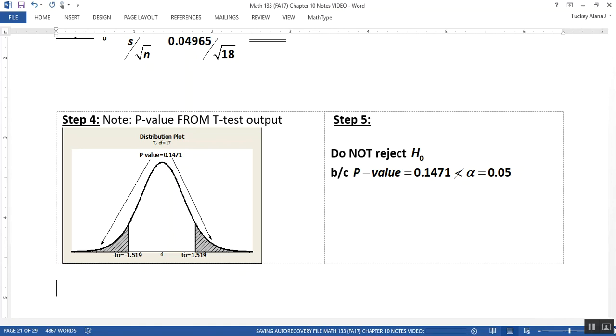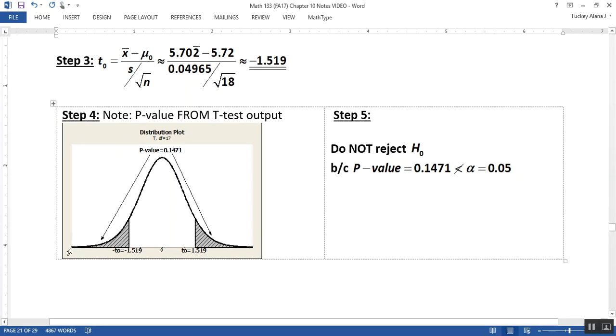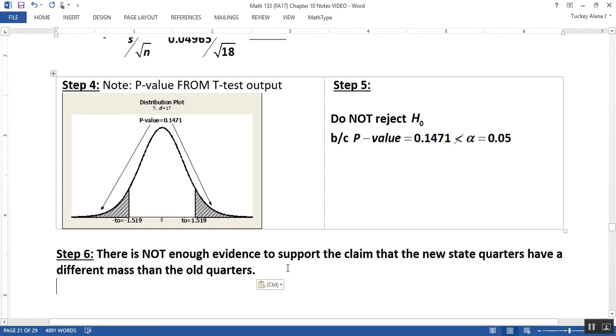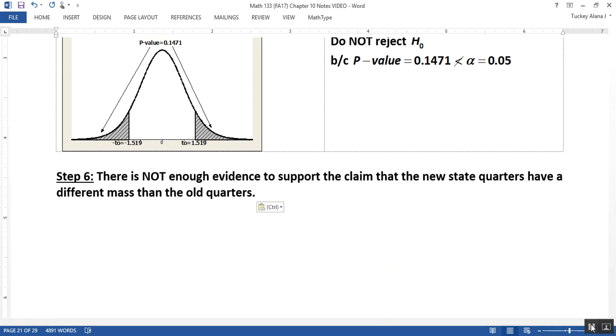All right, now we have to remind ourselves how to write the conclusion. Well, in section 10.1, we learned that when we did not reject the null hypothesis, there is not enough evidence to support the claim that was made in the alternative hypothesis. The alternative is always what our claim is. So we would write, there is not enough evidence to support the claim that the new state quarters have a different mass than the old state quarters. This beginning part is kind of set in stone. There's not enough evidence to support the claim. It's this part back here where we have to kind of describe what the alternative hypothesis was in our case. That's where the real work on this part is, to give it context and make sure it makes sense.